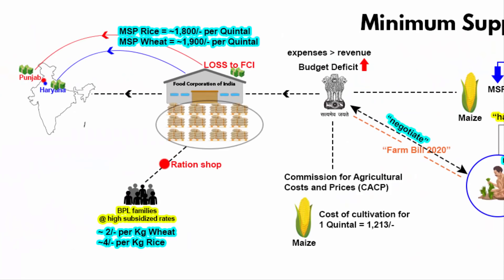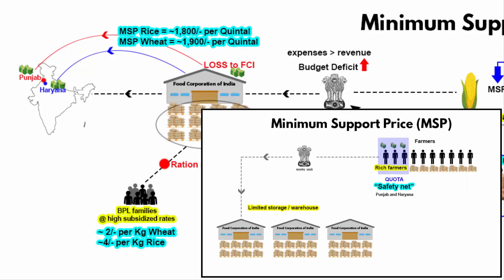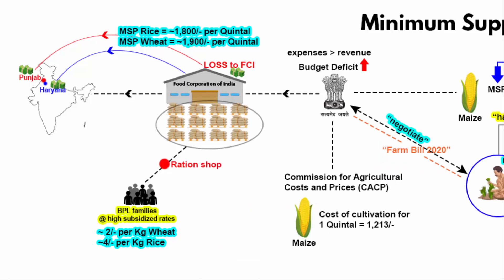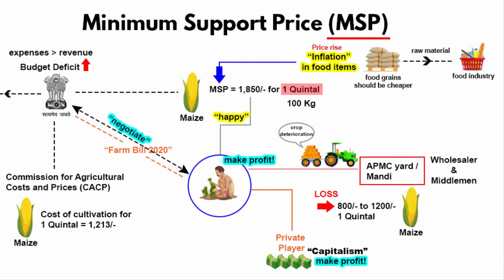It is a fact that every year, farmers from Punjab and Haryana sell almost their entire produce to the FCI, meaning farmers from other states do not get much benefit from the government's safety net. There has to be some mechanism to control all of this and also the inflation rate. This way, the government will be happy, farmers will be happy, and the economy will recover from its budget deficit. I hope you have understood everything about the Minimum Support Price system.